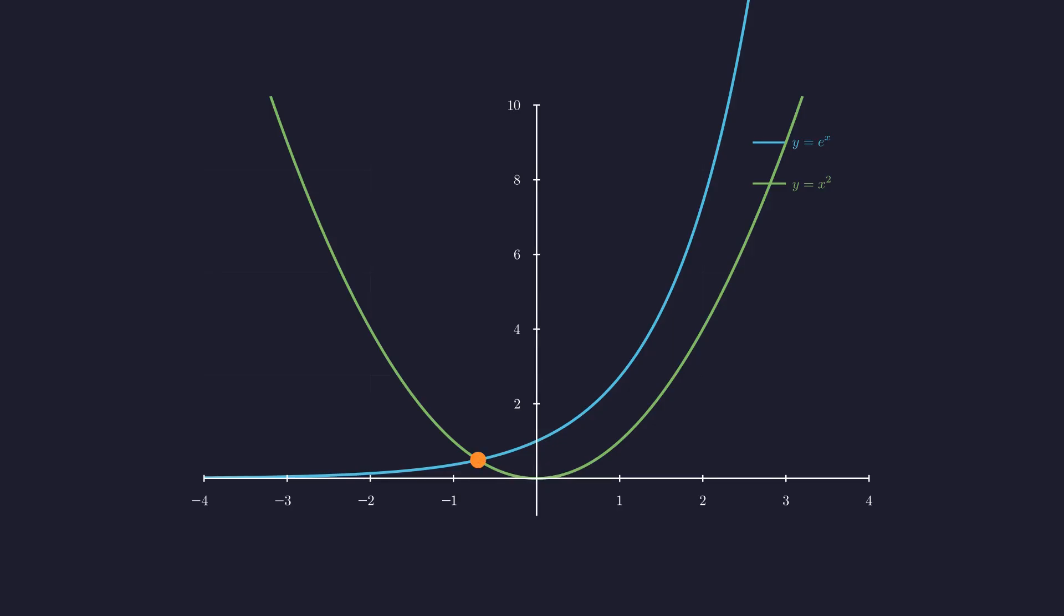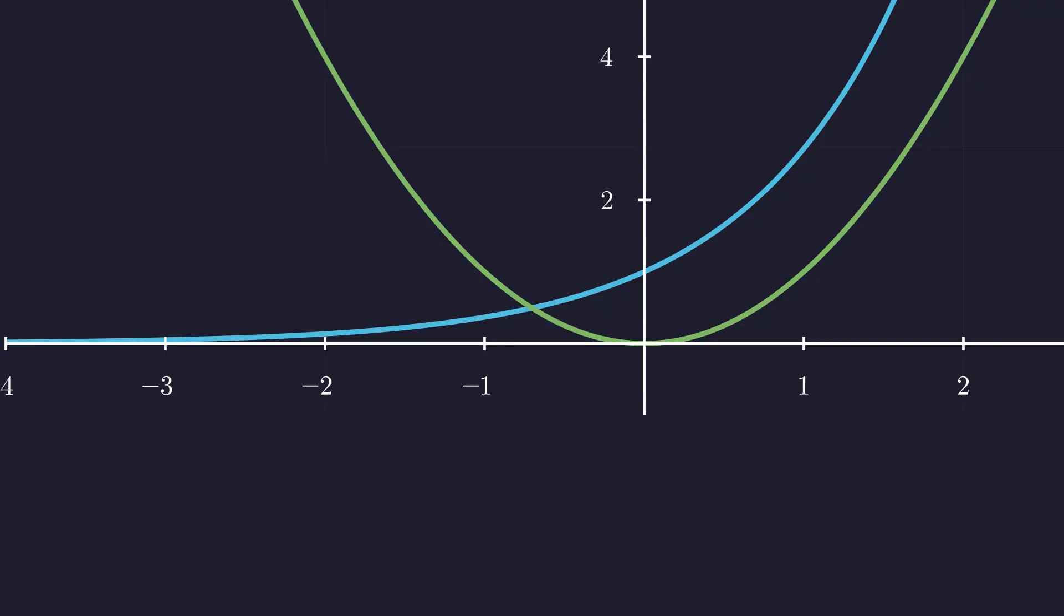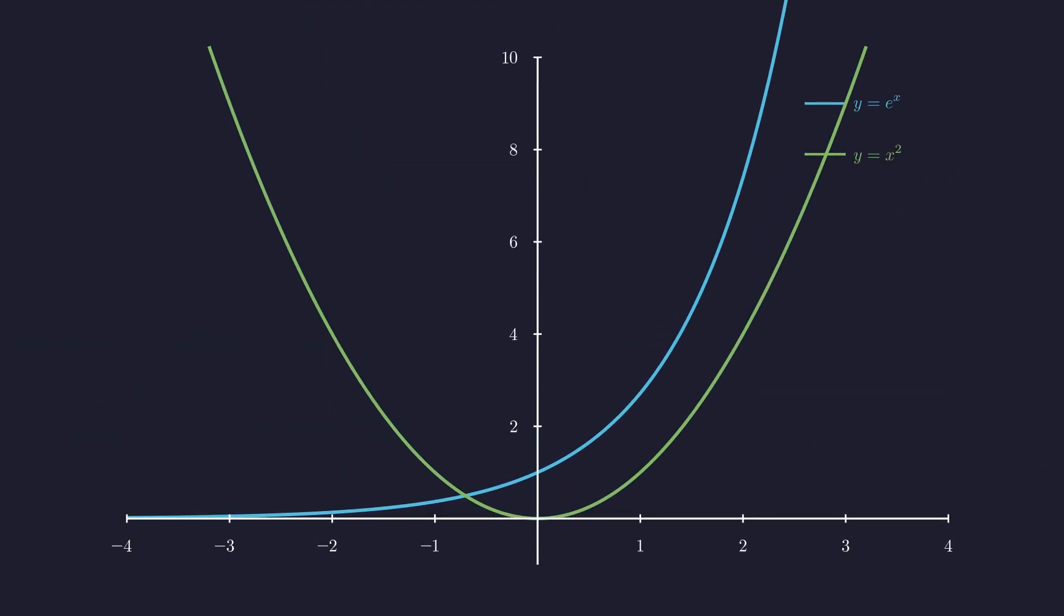Notice there's exactly one intersection point, located in the second quadrant where x is negative and y is positive. On the positive side, the exponential grows far too fast for the parabola to ever catch up. Let's zoom in to see exactly where these curves intersect. At x equals negative 0.703, both functions have the same value. Zooming back out, we can see the full behavior.